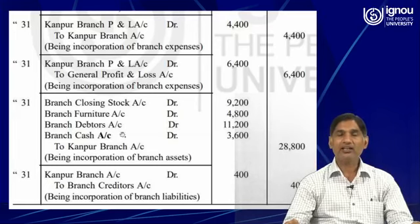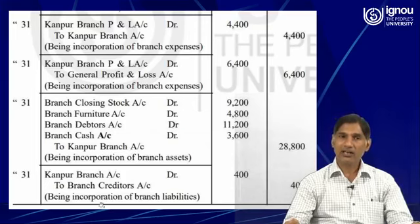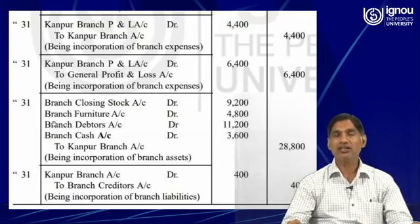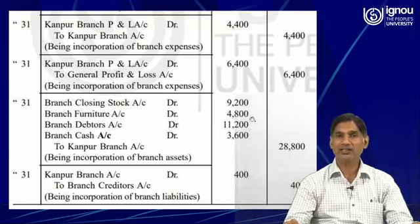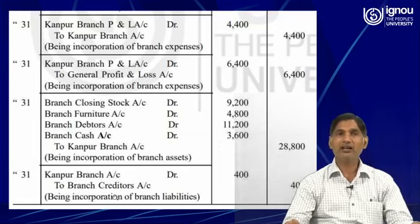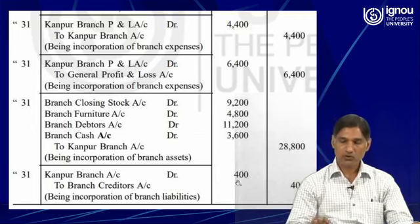In the journal entries for the assets, the Kanpur branch account was credited. But now we will debit the Kanpur branch account because this journal entry belongs to liabilities, whereas the previous journal entry belongs to assets. For assets, all individual assets are debited and Kanpur branch account is credited. Likewise, liabilities have a credit balance, so liabilities are credited and accordingly the branch account has been debited by rupees 400.